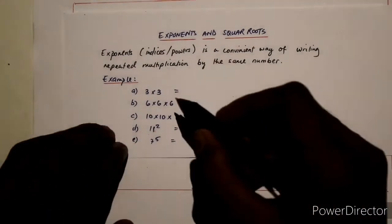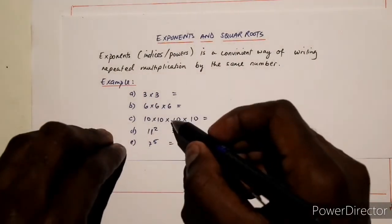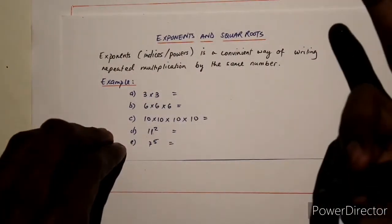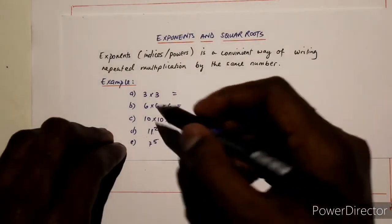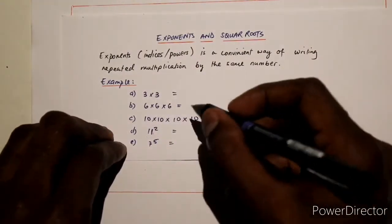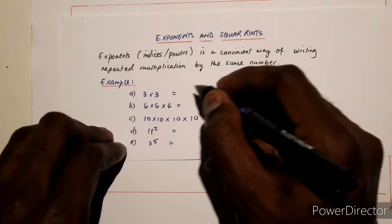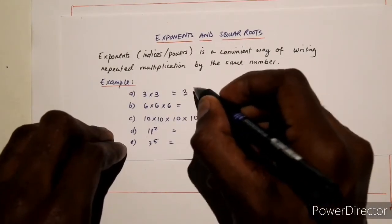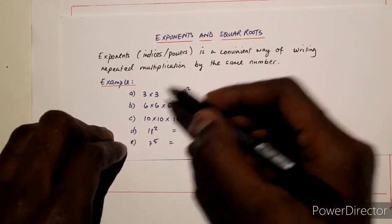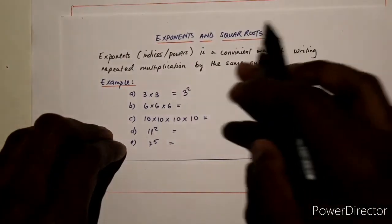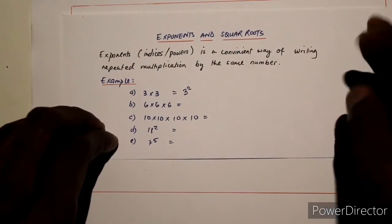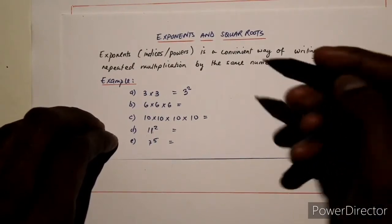For example, if we have 3 times 3, you are multiplying 3 two times. So this 2 becomes your power and this 3 becomes your base. You will have 3 to the power of 2, which is equivalent to 3 times 3. That's simply what is known as exponential indices, sometimes known as power.